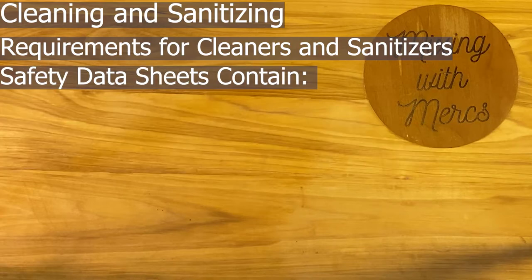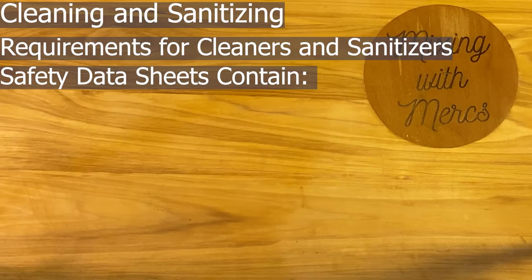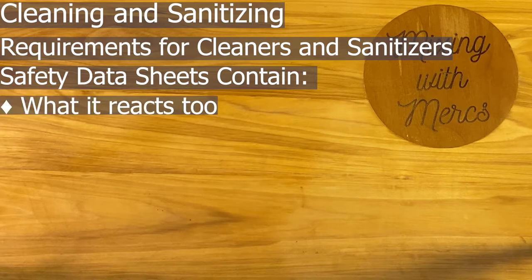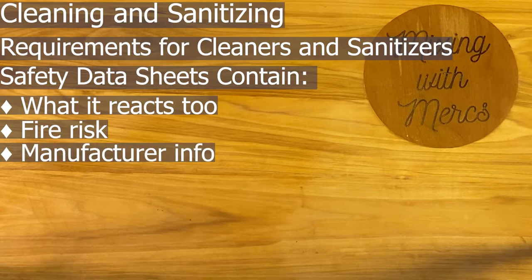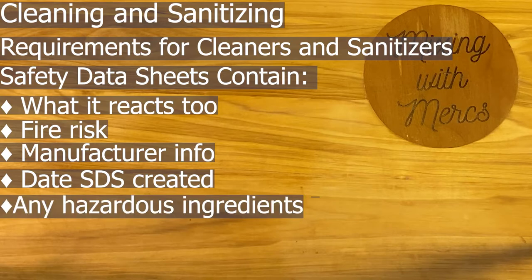Safety Data Sheets include a lot of information about how to safely use a product — how specifically to use it, what applications are appropriate, and what to do if you swallow it, if it gets in your eyes, or on your skin. SDS also contain what the chemical reacts to, any fire risks, manufacturer info, the date the SDS was created so you know if you have the most recent version, and any hazardous ingredients that might cause issues.